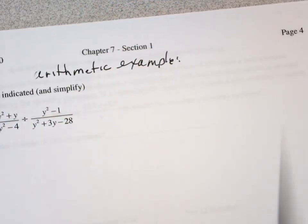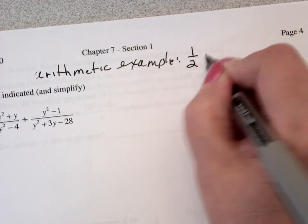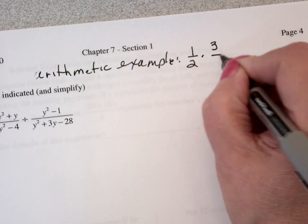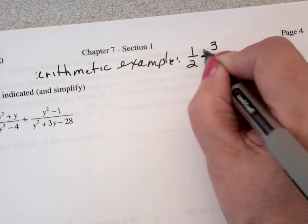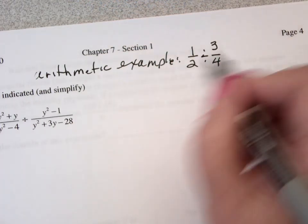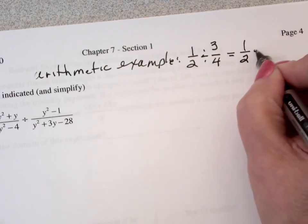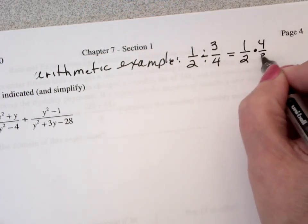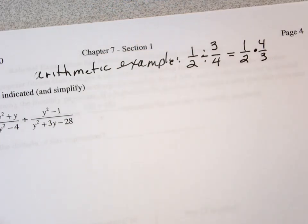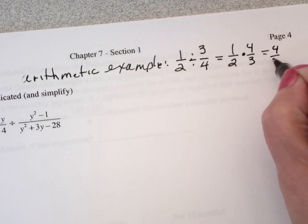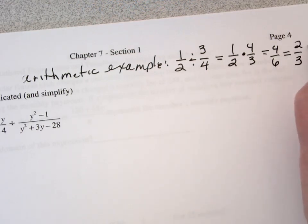So an arithmetic example, if I were to take 1 half divided by 3 fourths, this would be invert and multiply: 1 half times 4 thirds. This would be multiply 4 over 6, reduce my fraction, I'd end up with 2 over 3.